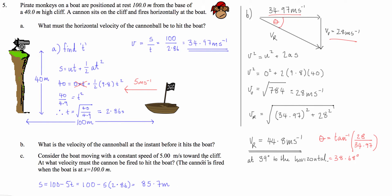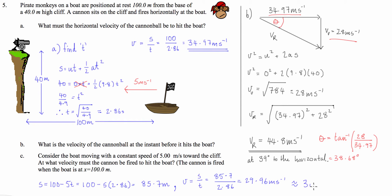The cannonball has to cover 85.7 metres in 2.86 seconds. Using the same velocity formula: velocity equals distance over time, which is 85.7 divided by 2.86, giving 29.96 metres per second — approximately 30 metres per second. That's Part C.